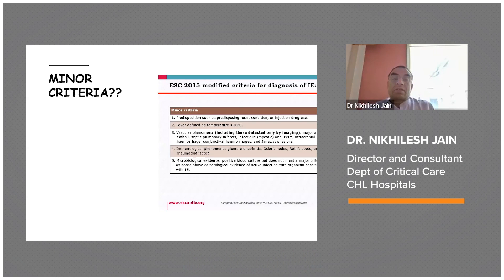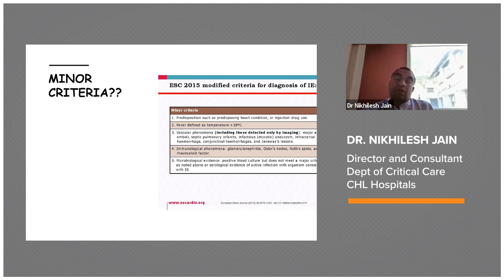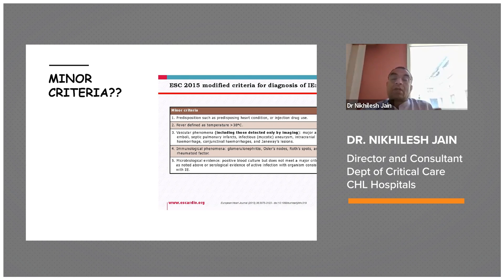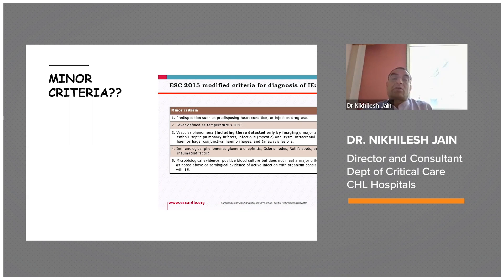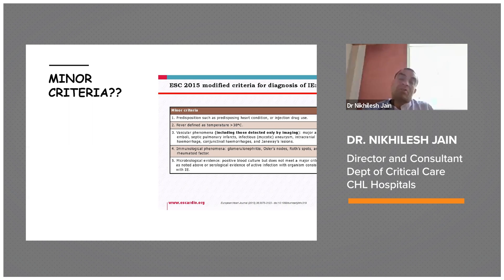The minor criteria for the 2015 ESC modification include: predisposition such as predisposing heart condition or injective drug use; fever defined as temperature more than or equal to 38 degrees centigrade; vascular phenomena including those detected only by imaging — major arterial emboli, septic pulmonary infarcts, infectious mycotic aneurysm, intracranial hemorrhage, conjunctival hemorrhages, and Janeway spots. Immunological phenomena such as glomerulonephritis, Osler's nodes, Roth spots, and rheumatoid factor. Microbiological evidence in the form of a positive blood culture that does not meet major criterion, or serological evidence of active infection with an organism consistent with infective endocarditis.